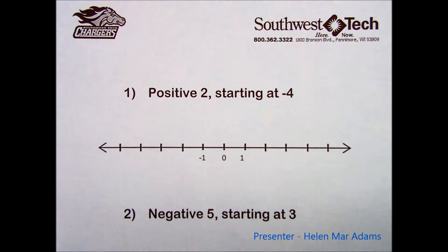Practice set 5 asks that we draw a number arrow for each of the following, and problem number 1 says a positive 2 starting at negative 4.